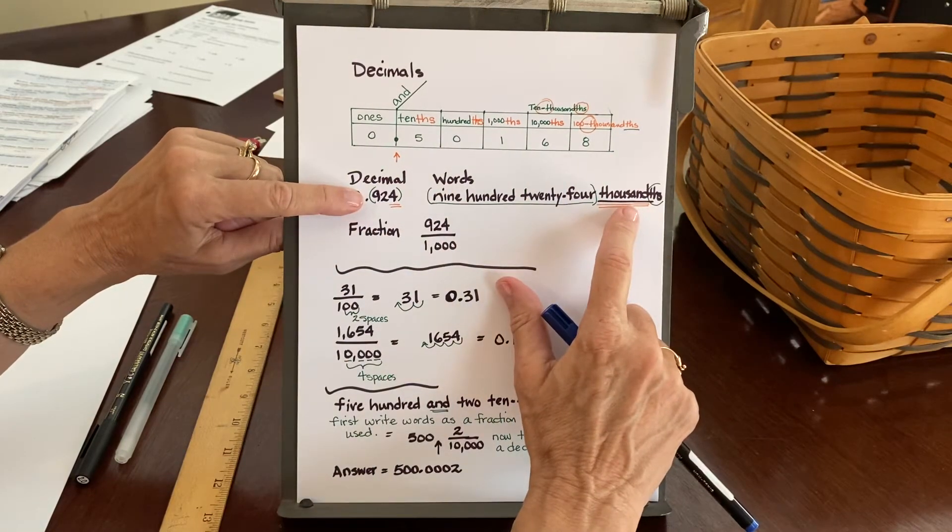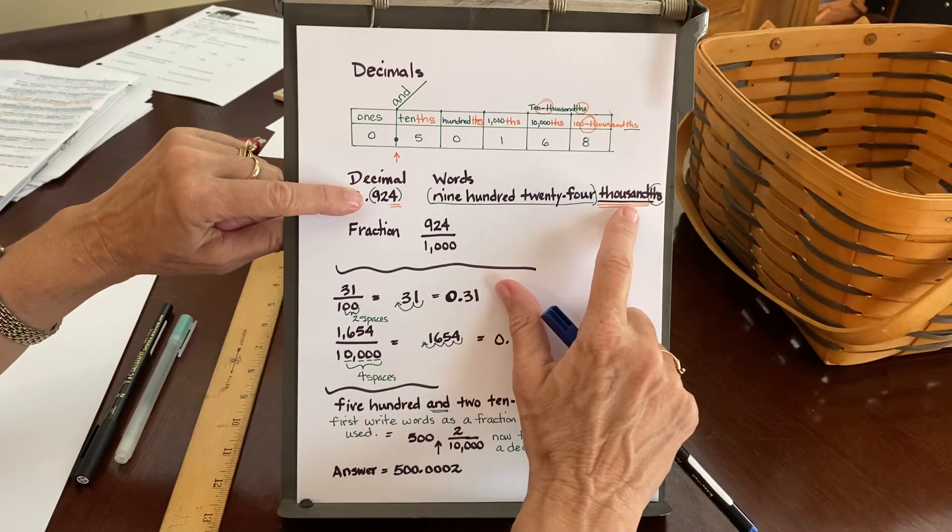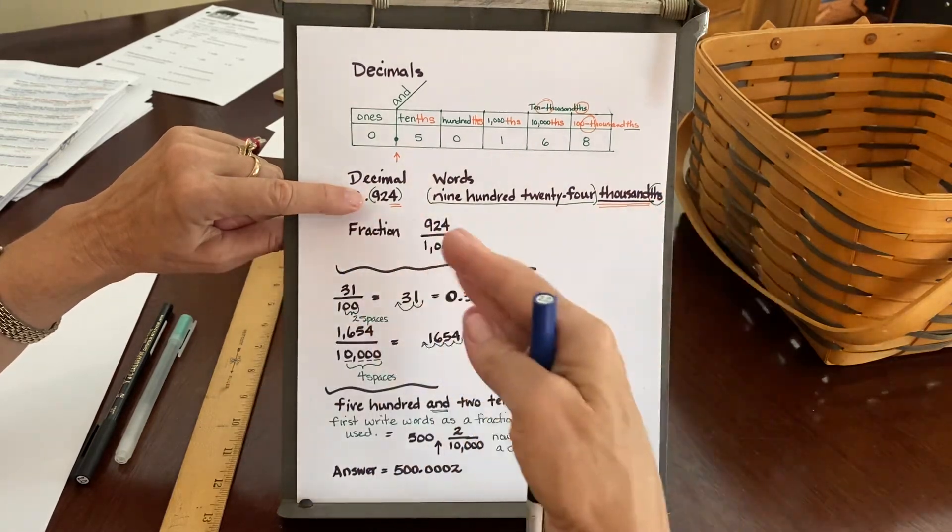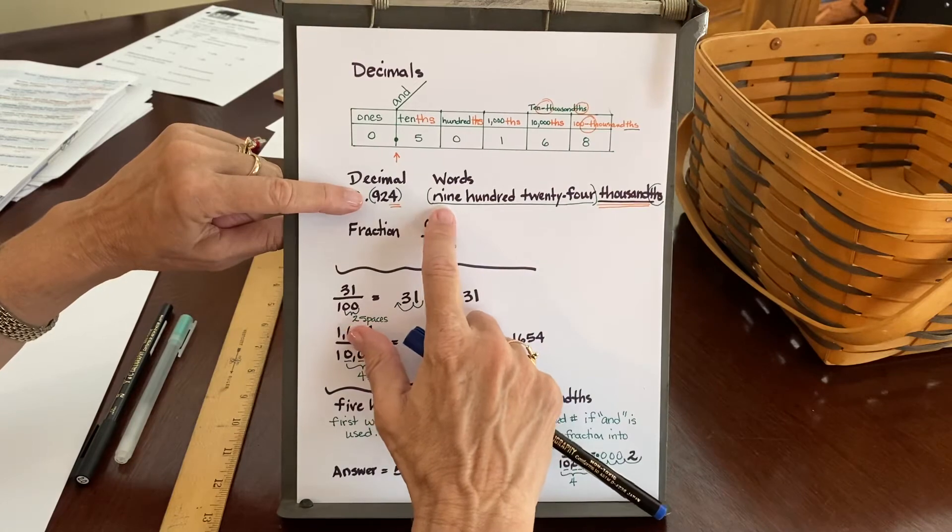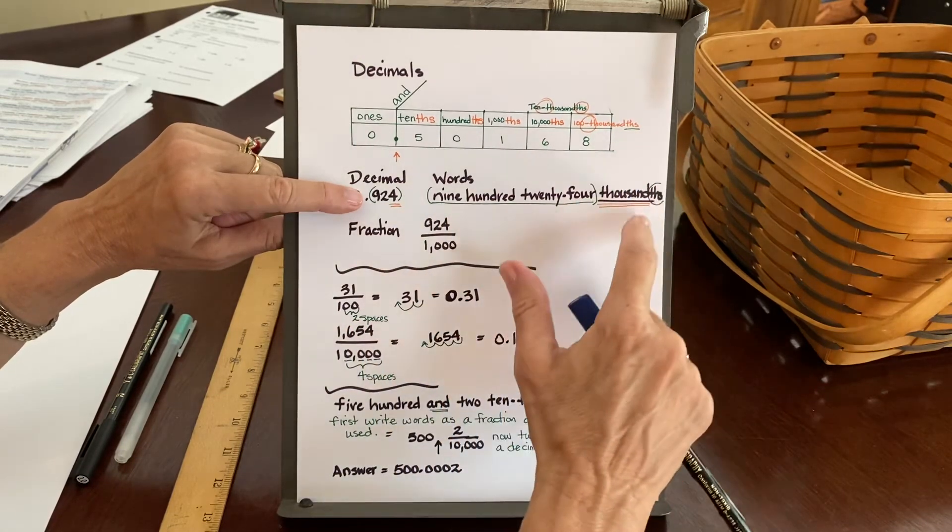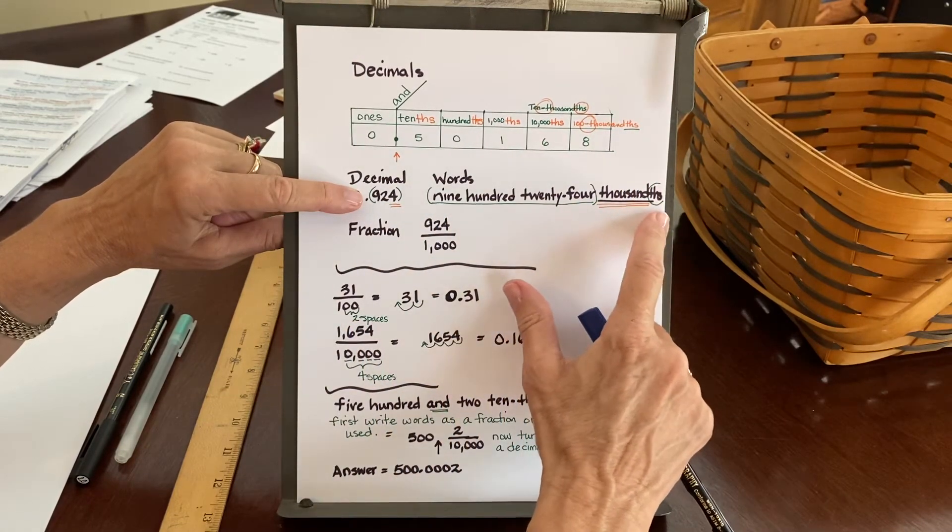And so that's why we put that word on the end of this. So our word, this number written in words would be 924 thousandths with the THS on the end of that.